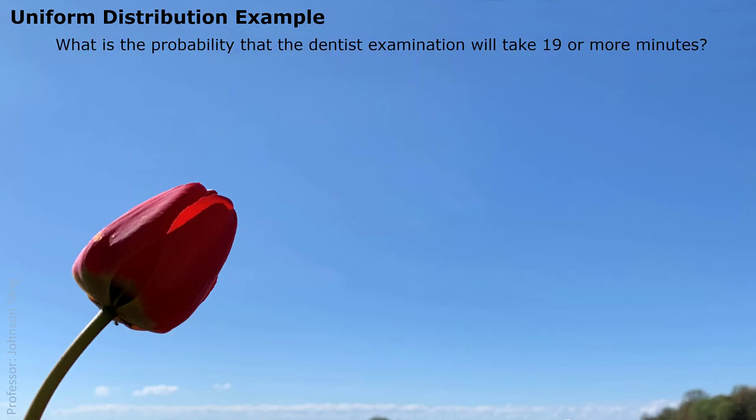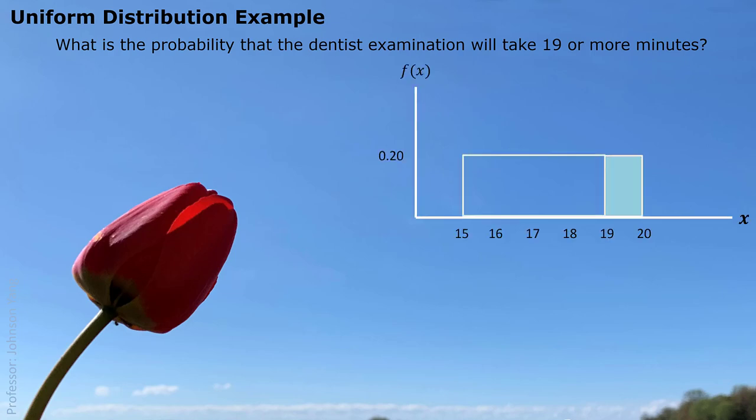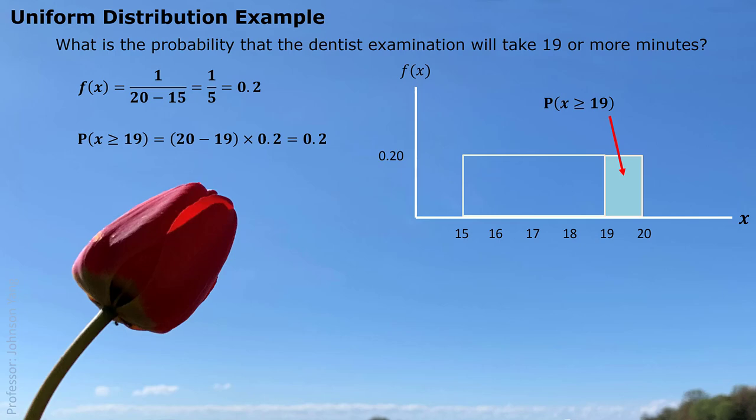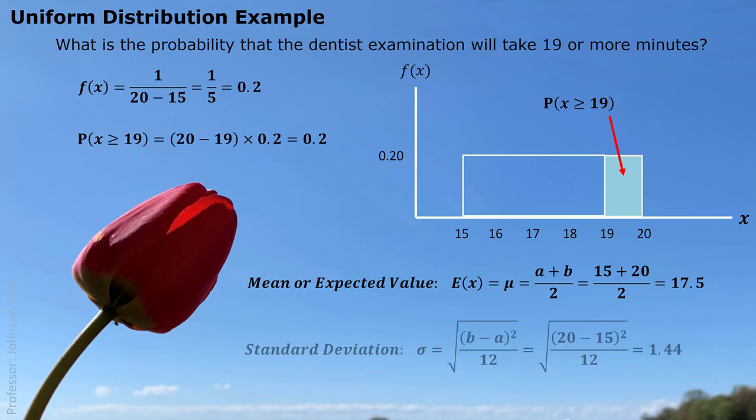What is the probability that the dentist examination will take 19 or more minutes? We look at the light blue area on the other end, above 19. Similarly, we get a 20% chance the examination will take more than 19 minutes. Using the formulas for mean and standard deviation: the average examination time is 17.5 minutes, and the standard deviation is 1.44 minutes — meaning the average distance of all examination times from the center value of 17.5.